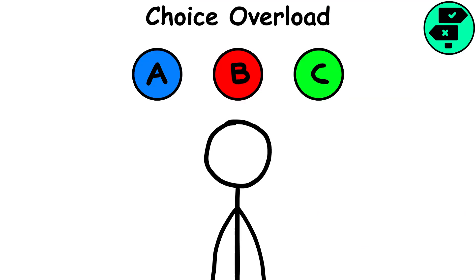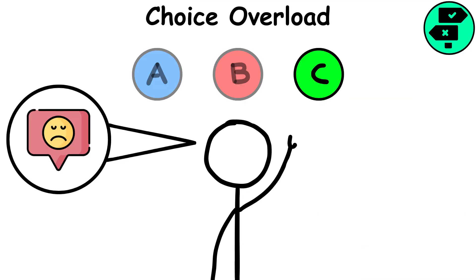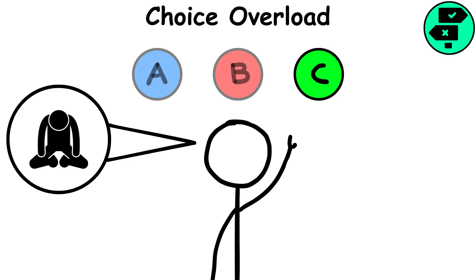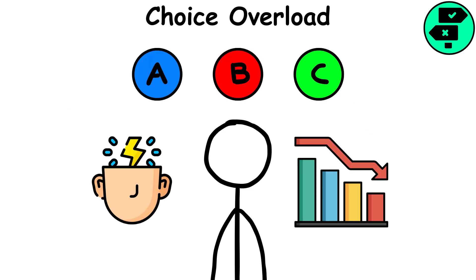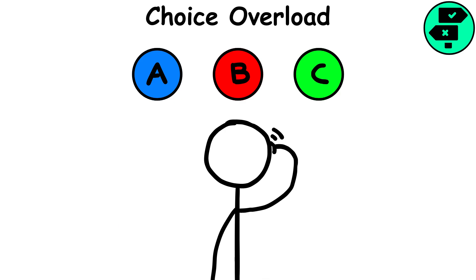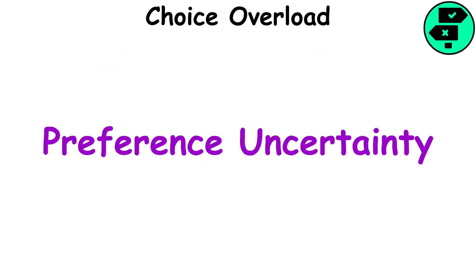Choice overload. When given more options to choose from, people tend to have a harder time deciding, are less satisfied with their choice, and are more likely to experience regret. Having more options to consider drains our mental energy more quickly. Trying to find the best option also makes us prone to choice overload, as does preference uncertainty.